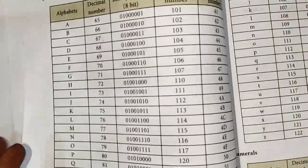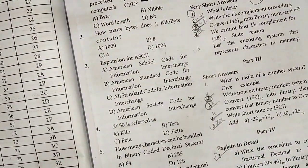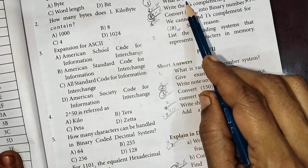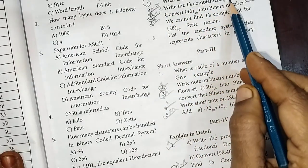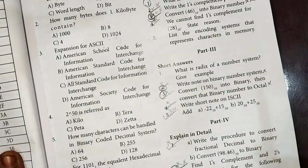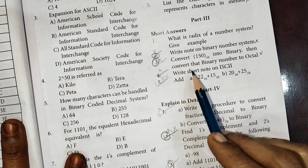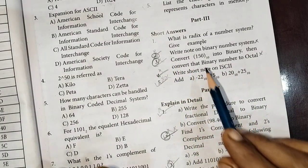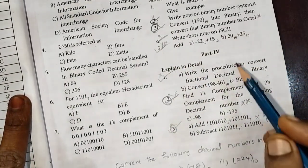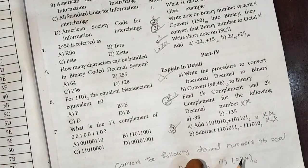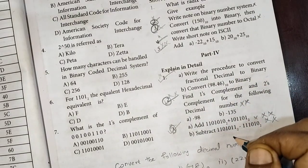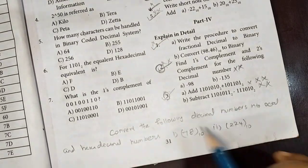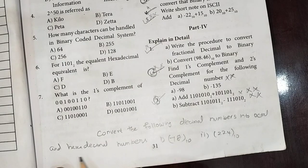Chapter 2 is also Fundamentals of Computers, focusing on number systems — binary and number conversions. This chapter is compulsory. For 1-mark questions, expect 8. For 2-mark questions: what is data, write the one's complement procedure. For 3-mark short answers: questions 2, 3 (repeated twice), 4, and 5 are important. For detail questions, convert the following decimal numbers into octal and hexadecimal numbers.